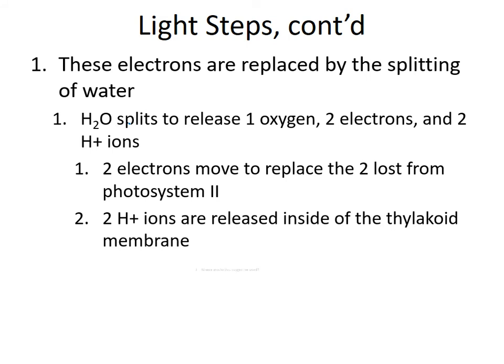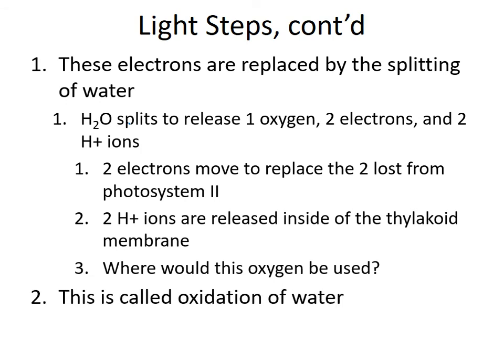The H+ ions stay inside the thylakoid. The oxygen combines with covalent bonds and diffuses out of the thylakoid, out of the chloroplast, into the spongy mesophyll, and out of the stomata. This is called the oxidation of water — in chemistry, whenever you lose electrons, it's called oxidizing. Because water lost its electrons to this process, it's called the oxidation of water.